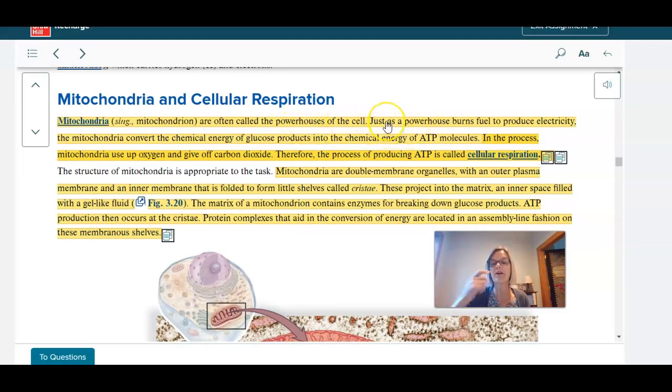And here it says, just as a powerhouse burns fuel to produce electricity, the mitochondria convert chemical energy of glucose into chemical energy called ATP. And so the idea is, what do the mitochondria do?